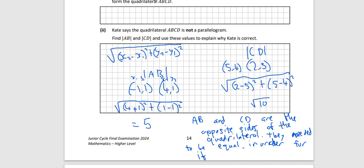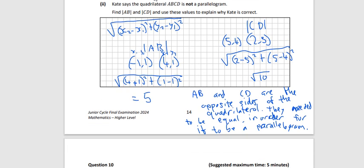That doesn't look like the word 'order', but that's what I mean. AB and CD are the opposite sides of the quadrilateral. They needed to be equal in order for it to be a parallelogram. So to be a parallelogram, opposite sides have to be the same.